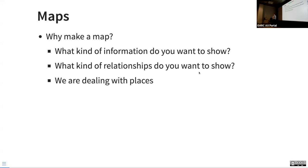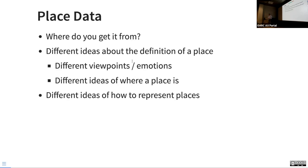One of the things you really deal with are places. If you have a map without anything on it, you're just showing terrain. But if you have names, if you have any kinds of associations, you're dealing with places. Let's think about what place data is and where you get it from. I'm going to open this up for people at home — throw it in the chat. Where do you get place data from?